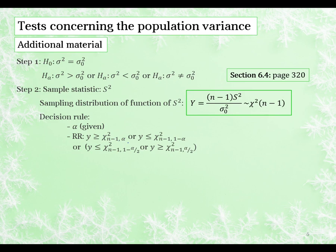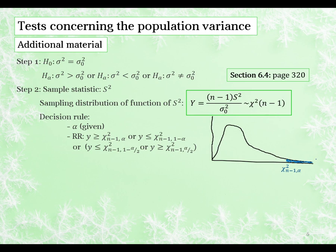What I want you to notice is that for the chi-squared distribution, the area given in the tables is the area in the upper tail. So if we look at a right-sided test, that area will be in the upper tail. You should also notice that this distribution is not symmetric, so we can't use symmetry the way we did with the t and the normal distributions.